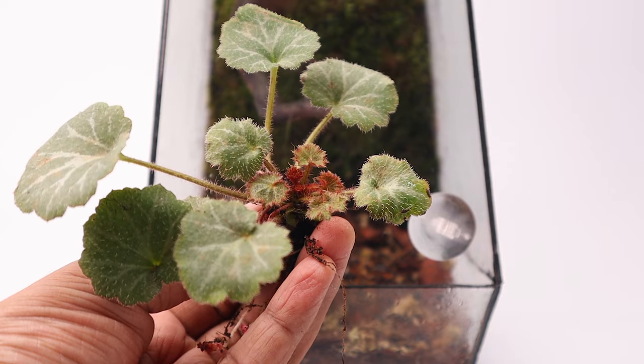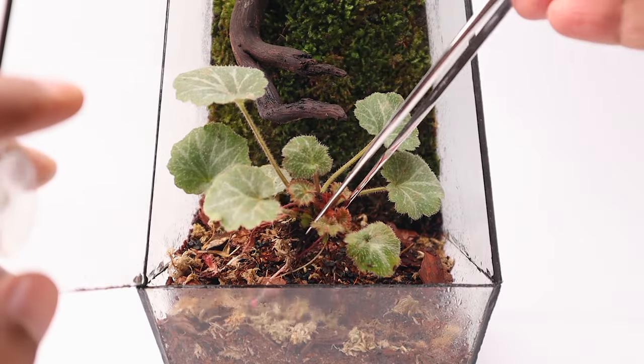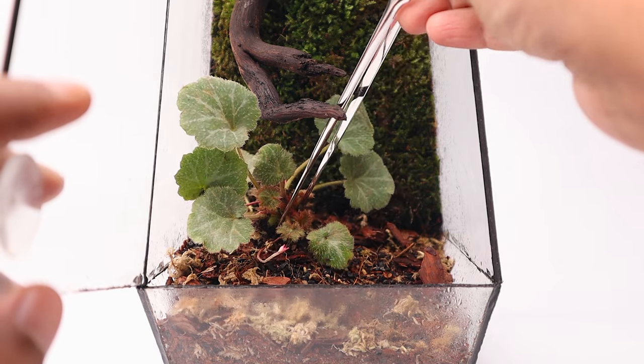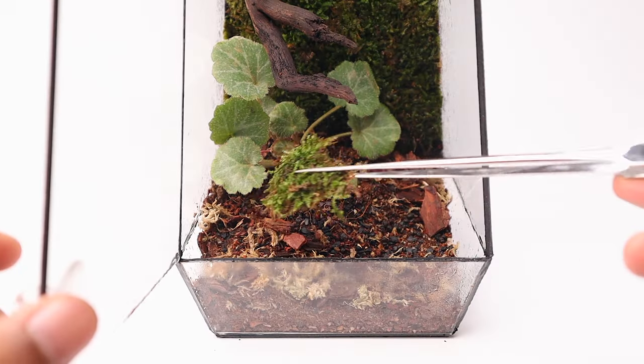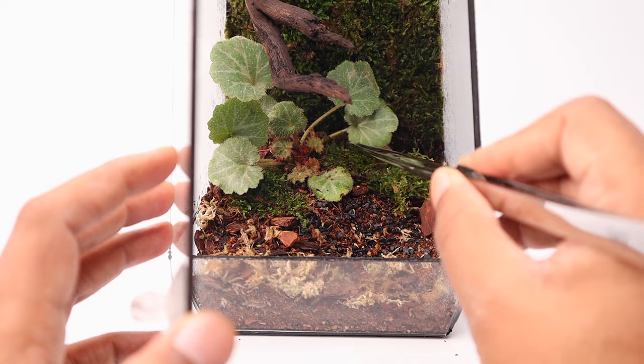I start with a strawberry begonia which interestingly is neither a strawberry nor a true begonia. More about this plant in the description. I place patches of moss to cover the soil around the plant.